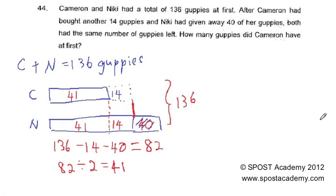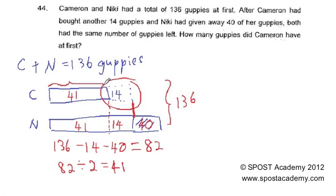So the question is asking: how many guppies did Cameron have at first? This dotted model does not belong to Cameron at first. Cameron actually only had this part, which is equivalent to 41. So we got the answer here.